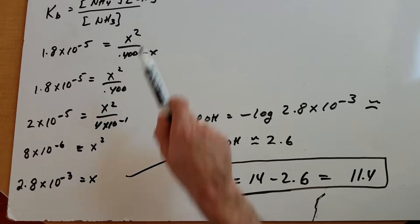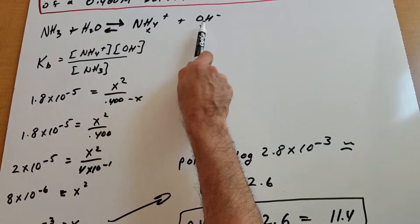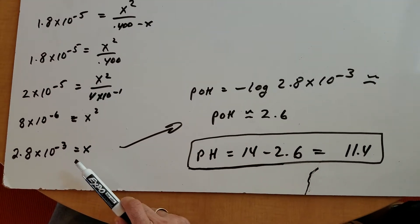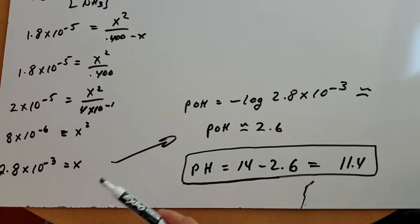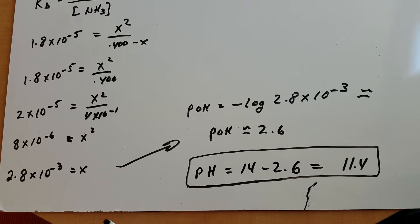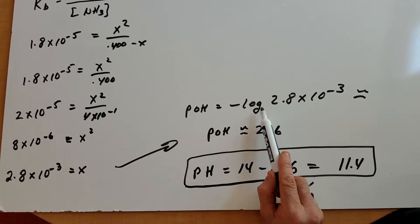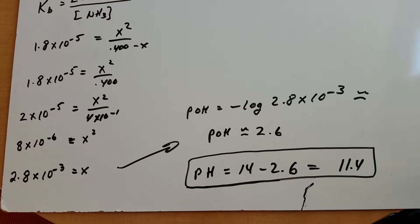That x is the amount of concentration of ammonium and OH minus. So because we got the OH minus, we're going to first find the pOH. The pOH is minus the log of the hydroxide ion concentration or minus the log of 2.8 times 10 to the minus 3.